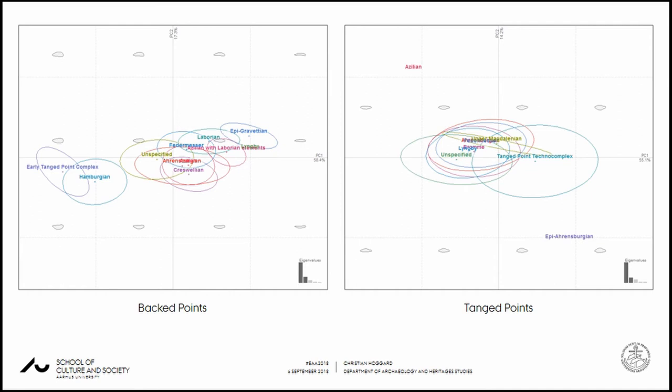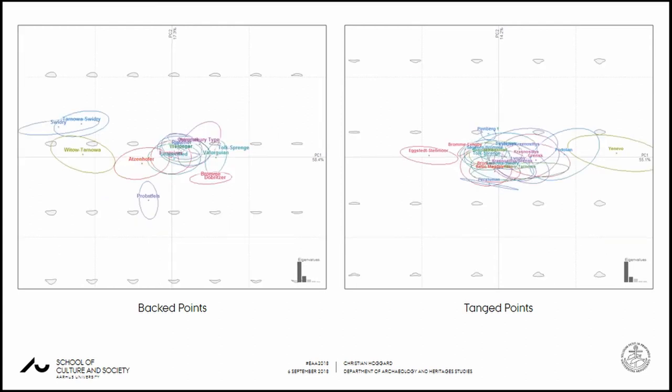For tanged point variance, less structure is present, with only a significant difference noted for the tanged point of the technocomplex. If we look at the ATU3 scale — below the Federmesser, so the Younger Wielner variance and older associated variance — we can see this is where the greatest amount of analytical units for a grouping can be observed, and we again see this pattern of structure and homogenisation.